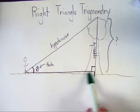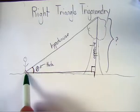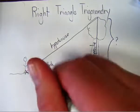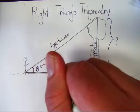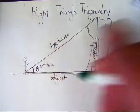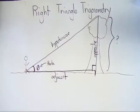And the side that connects to theta, that touches it, that is one of the rays that forms the angle, we call that the adjacent side.